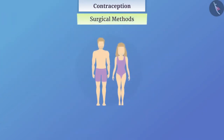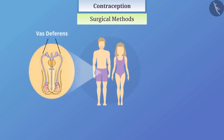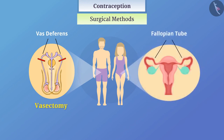Surgical methods are useful for those who do not want further pregnancy. In one of the methods, sperm transfer is prevented by blocking the male vas deferens. This technique is called vasectomy. In the same way, eggs are prevented from reaching the uterus by blocking the fallopian tube. This technique is called tubectomy.